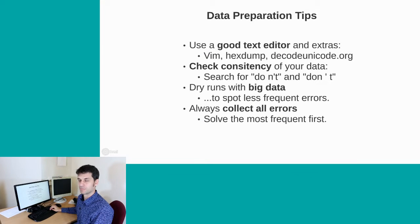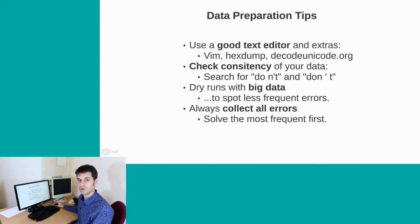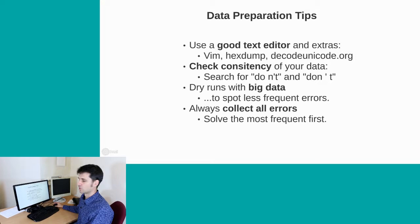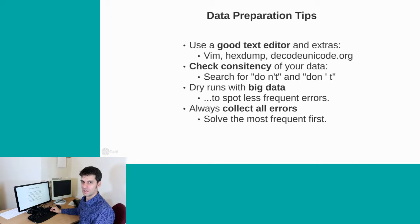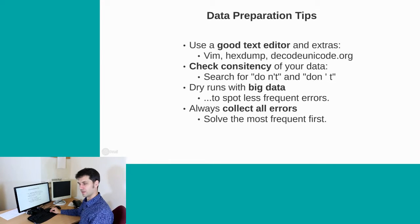So here are our data processing tips. You should use a reliable text editor such as vi, and complement it with hexdump and Decode Unicode every now and then. You should also check consistency of your data by specifically searching for things that can be done differently, such as the tokenization of 'don't'. All these dry runs should be run with as big data as you can get hold of, because then you can spot also less frequent errors. And finally, you should always collect all the errors and correct the most frequent ones first, which is very different from debugging a computer program.